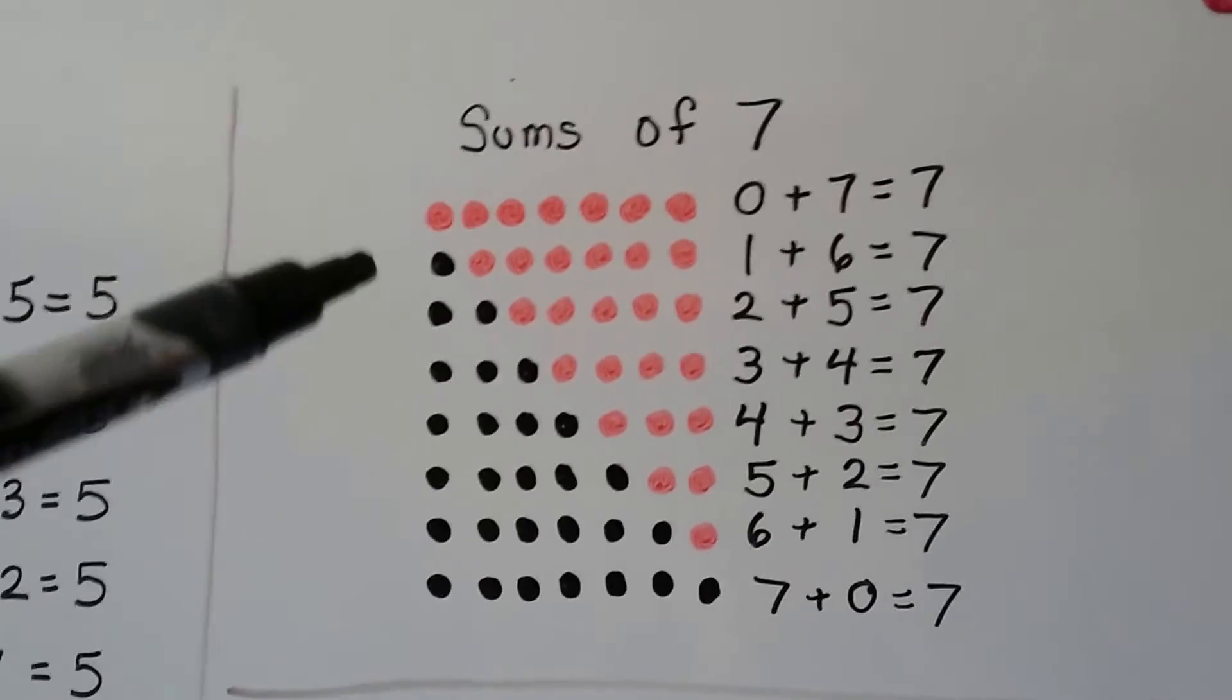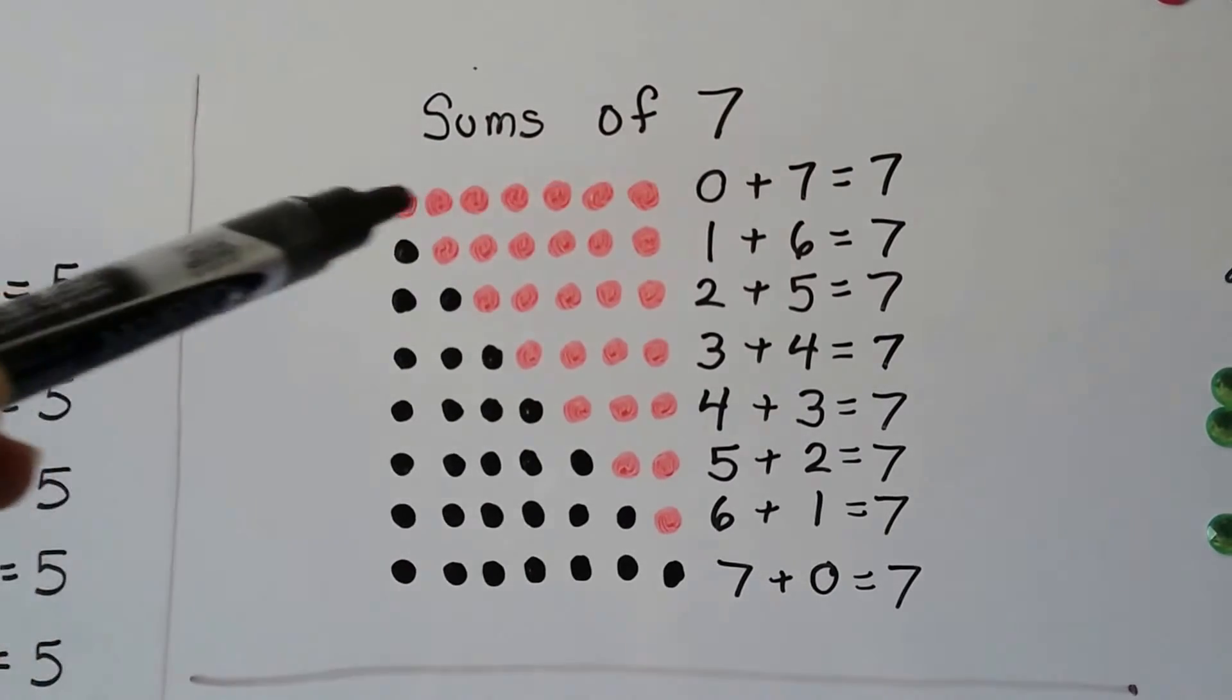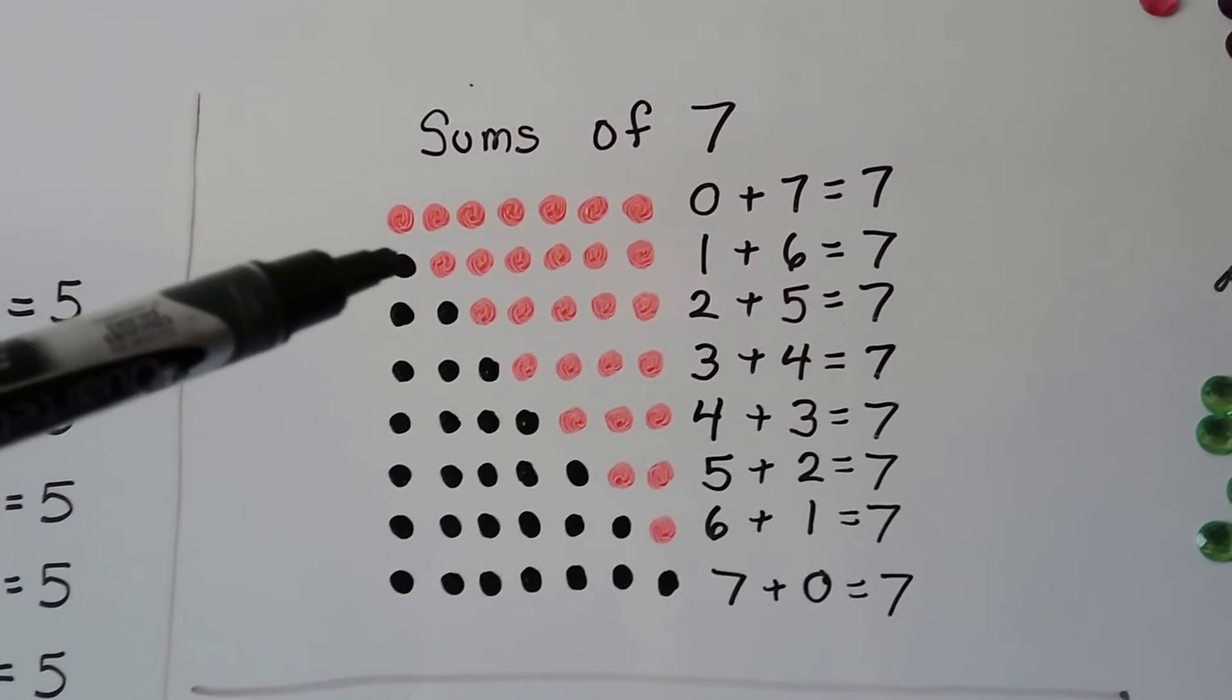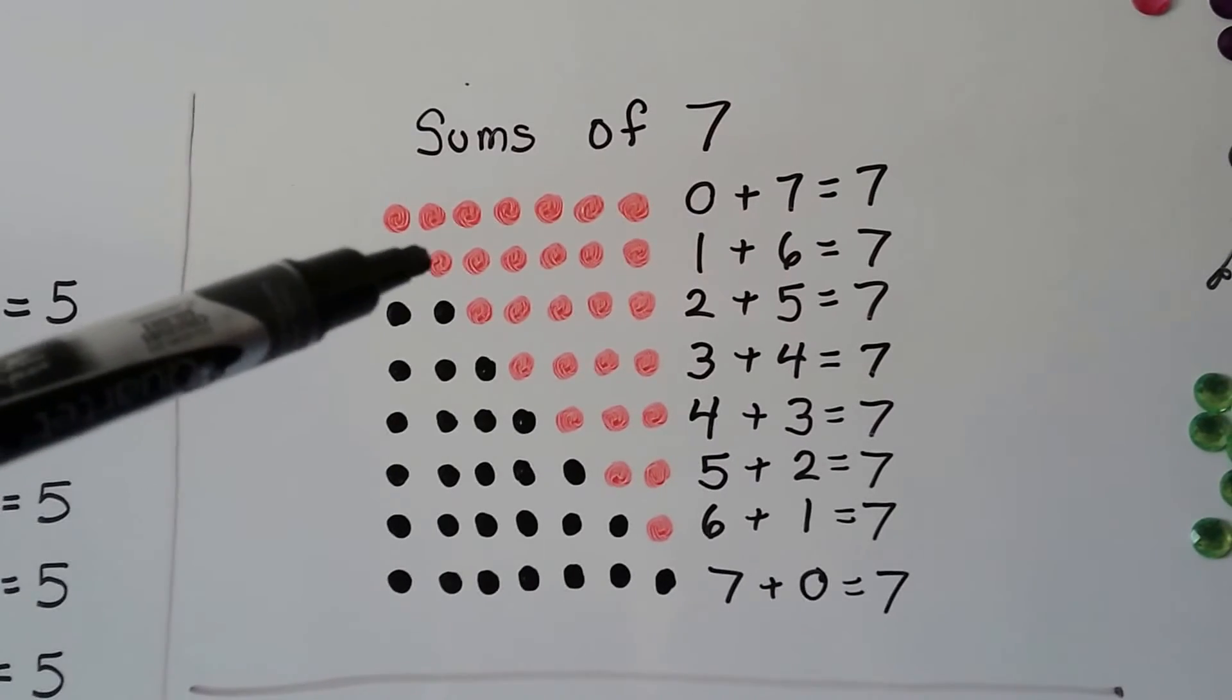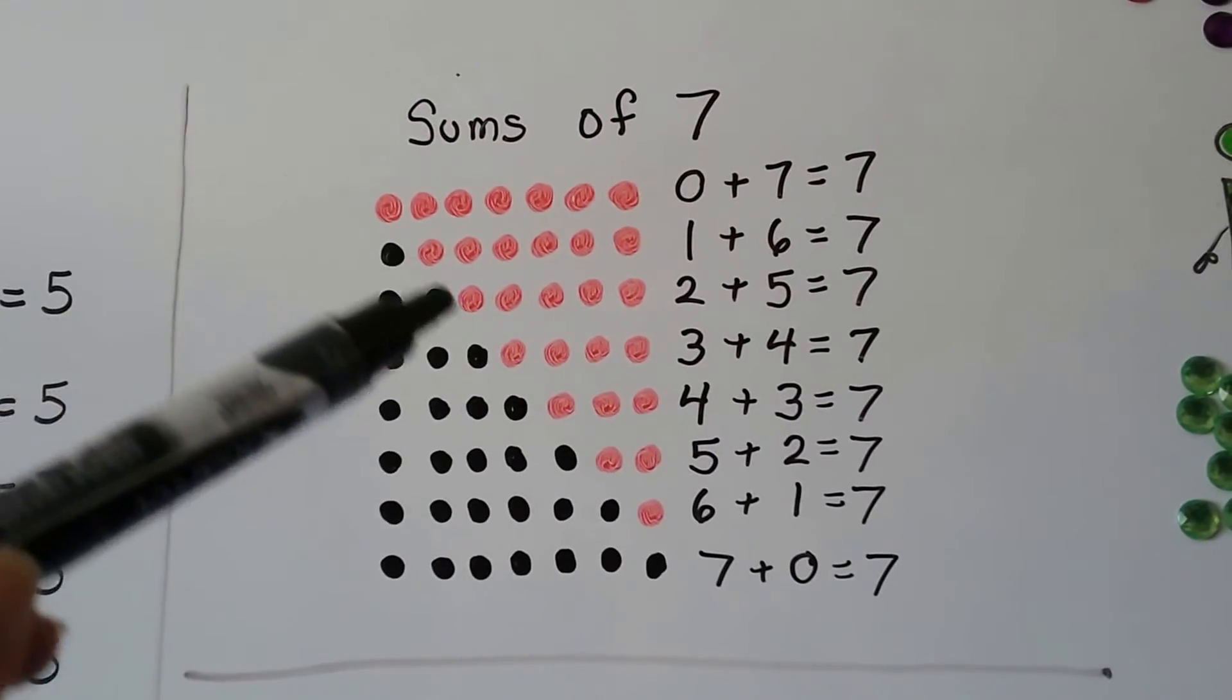So those are sums of six. Same thing with the sums of seven. We have all these pink dots. They're all pink. All seven of them. As soon as we add one black one, now we only have six pink ones. See?